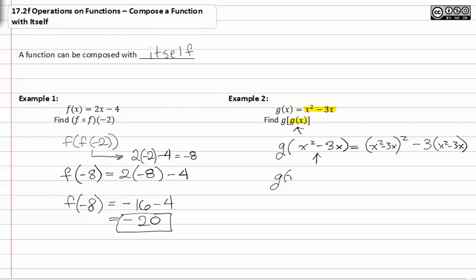So g of x squared minus three x, foiling this out, equals x to the fourth minus six x to the third plus nine x squared minus three x squared plus nine x.